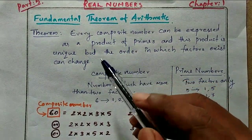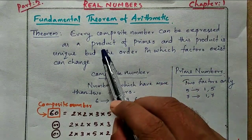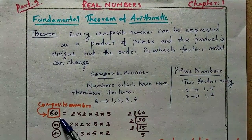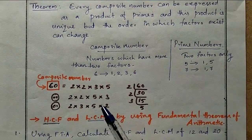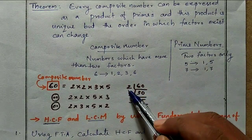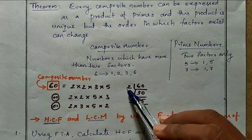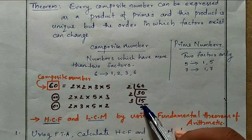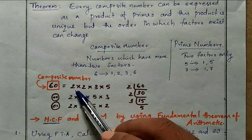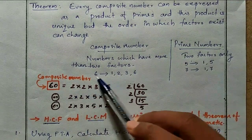The Fundamental Theorem of Arithmetic states that any composite number can be expressed as a product of prime numbers. For example, 60 is a composite number. 60 divided by 2 gives 30, 30 divided by 2 gives 15, 15 divided by 3 gives 5. So 60 can be expressed as the product of prime numbers: 2 × 2 × 3 × 5.